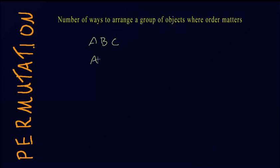Another way could be A, C, B. The position, the order of these letters matter, so A, B, C is different from A, C, B. Another way is B, A, C.